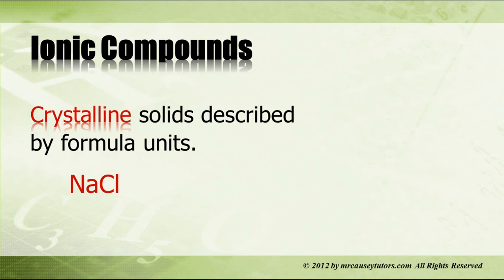And the formula unit would be something like sodium chloride and iron 3 oxide or calcium hydroxide. These are all ionic compounds, and they make crystals because of the very strong ionic bonds.